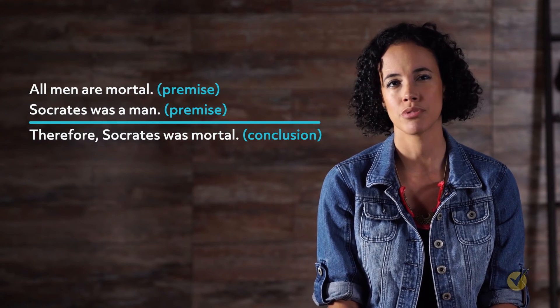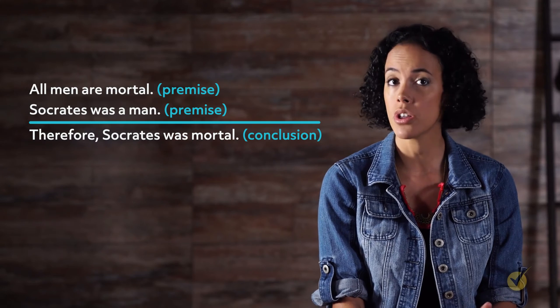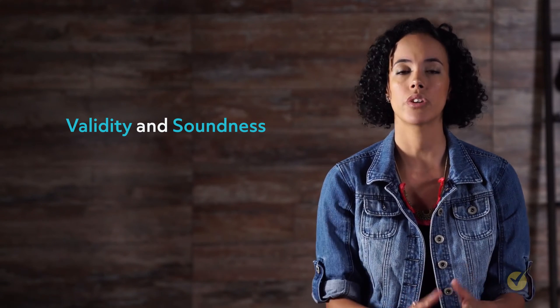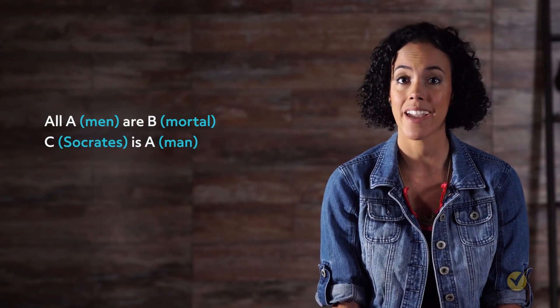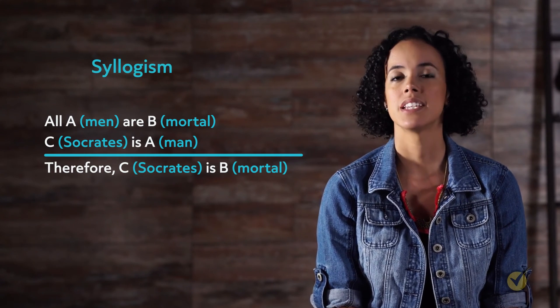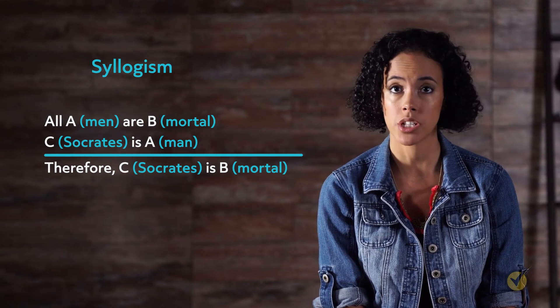Assuming that the premises are true, then it necessarily follows that the conclusion is also true based on the form of the argument itself. Let's look at the concepts of validity and soundness. An argument is valid if it follows the correct format. Our previous example can be replaced with the following formula: All A are B. C is A. Therefore, C is B. This type of logical argument is known as a syllogism. An essential factor here is that the conclusion follows logically from the premises — it is, by definition, valid. But what about soundness? A line of reasoning is considered sound if the premises and the conclusion not only follow the proper format but are also themselves true.